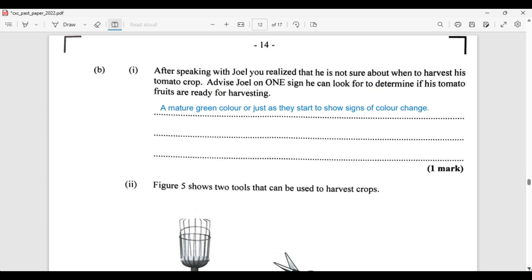After speaking with Joel, you realize that he is not sure about when to harvest the crop. Advise Joel on one sign he can look for to determine if his tomatoes are ready for harvest. He can look for what we refer to as a mature green color, or it can be done just as they start to show a sign of color change. Some might say yellow, some might say orange. Just at the point there that they start to show that color change, they are ready for harvesting.